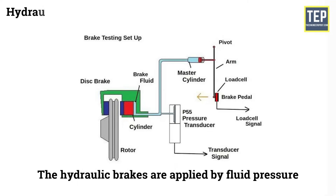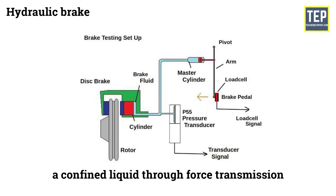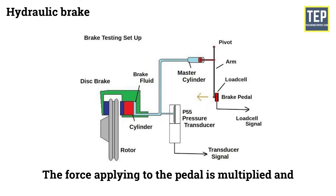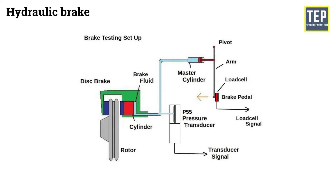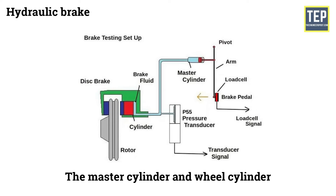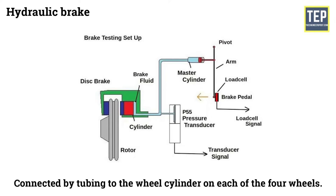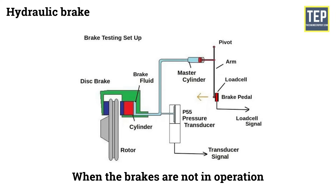Hydraulic brake. The hydraulic brakes are applied by fluid pressure. The pedal force is transmitted to the brake shoe by means of a confined liquid through force transmission. The force applied to the pedal is multiplied and transmitted to all the brake shoes by this system. It essentially consists of two main components: the master cylinder and the wheel cylinder. The master cylinder is connected by tubing to the wheel cylinder on each of the four wheels. The system is filled with liquid under light pressure when the brakes are not in operation.